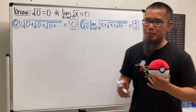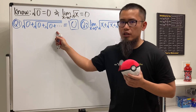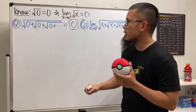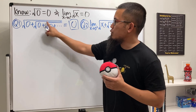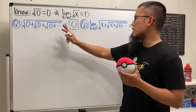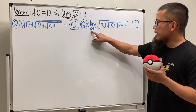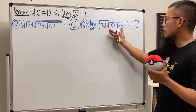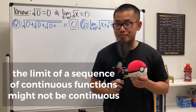Why is that the case? The biggest difference between problem one and problem two is that in problem one all those zeros are exactly equal to zero — they're exact zeros. So if you compute up to three of them: √(0 + √(0 + √0)) you just keep getting zero. However, when we have the limit as x approaches zero from the right, x is not exactly equal to zero anymore. The truth is: the limit of a sequence of continuous functions might not be continuous.